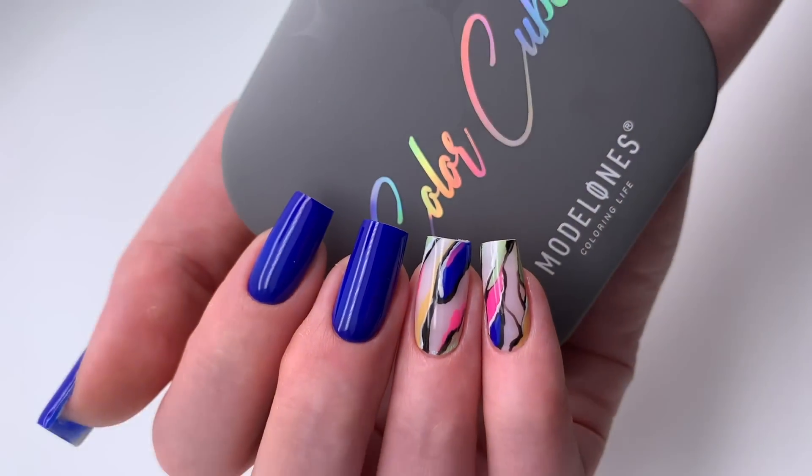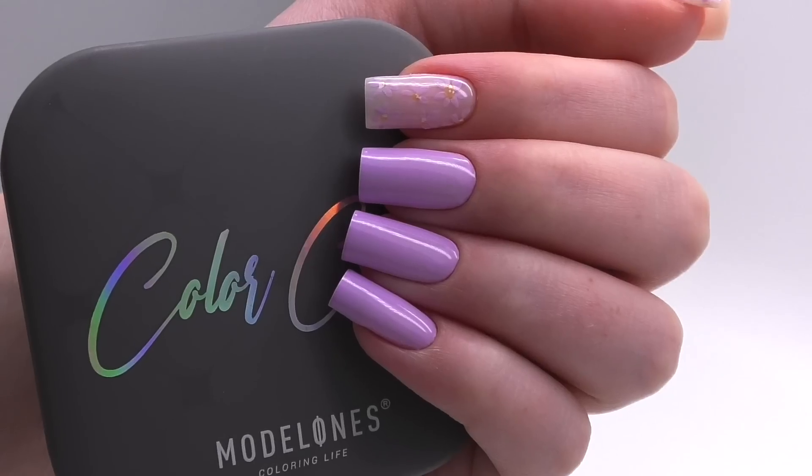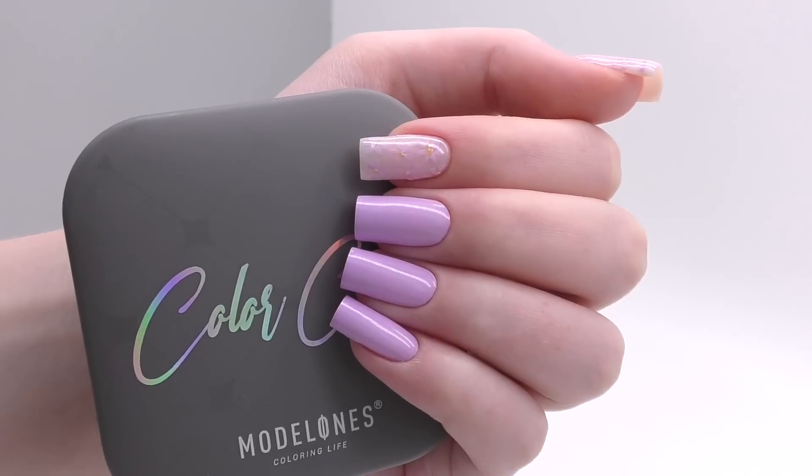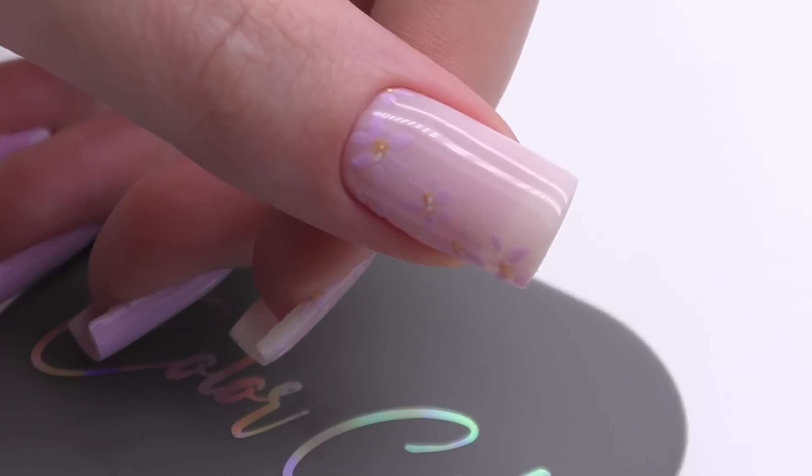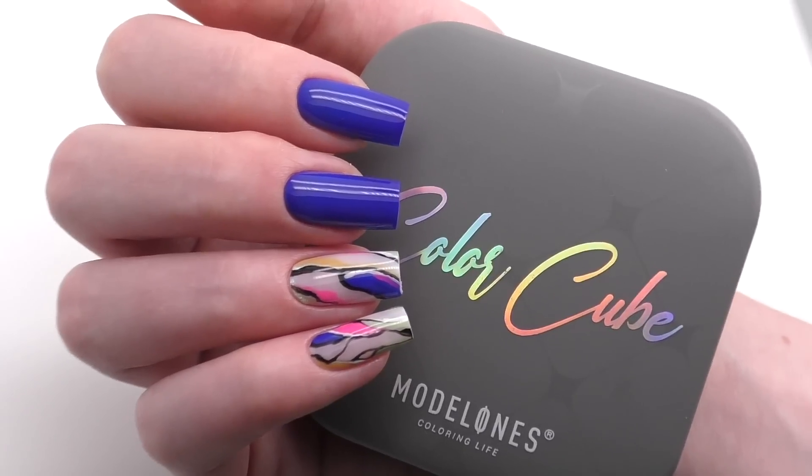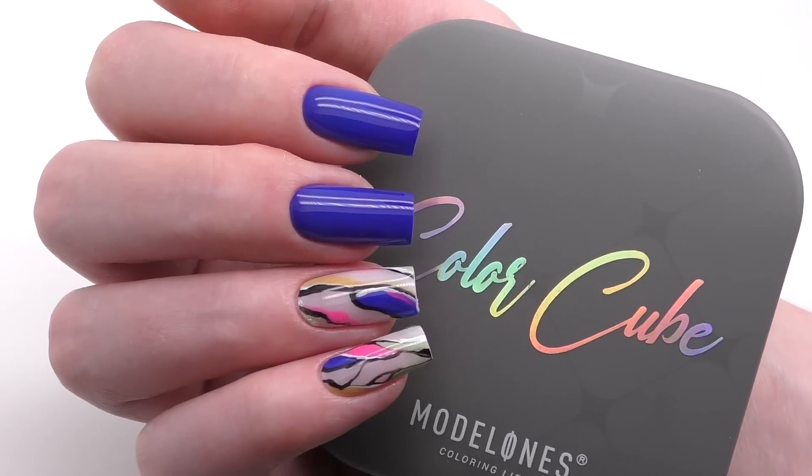Cure for 60 seconds in LED and seal it with a glossy top coat. The design is ready. Let me know what do you think about the design and about this sharp square shape. We have dreamy romantic lilac color with flower design on one hand and dark blue posh abstract nail art on another one.